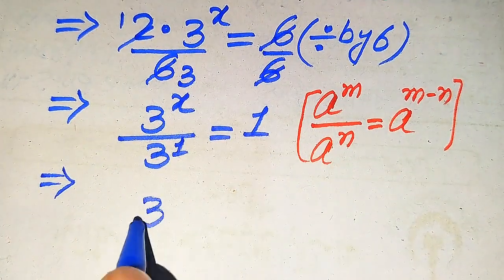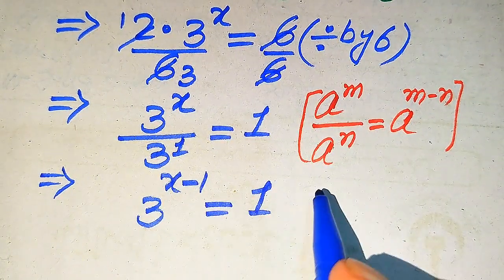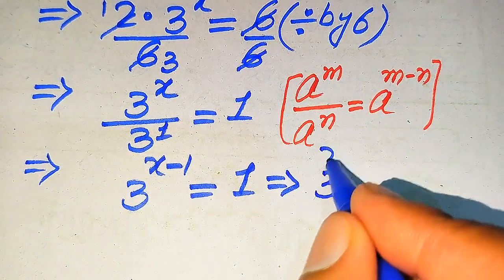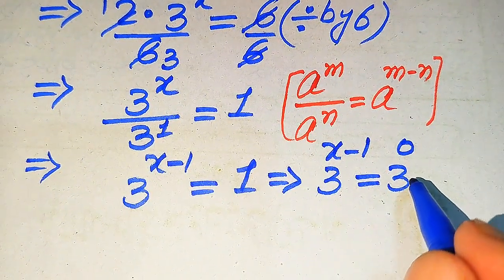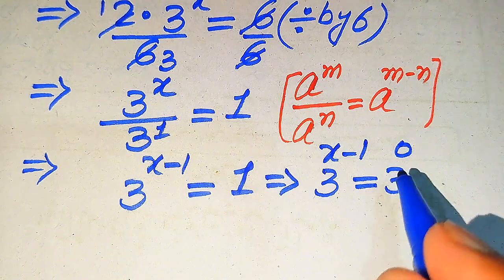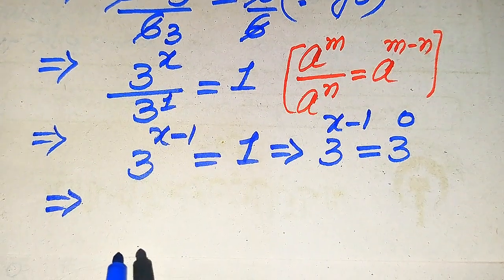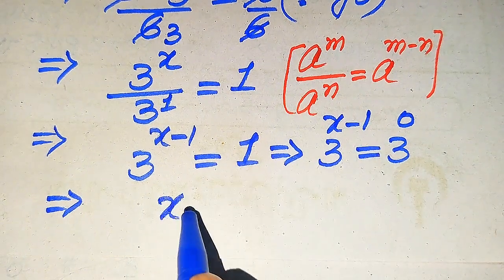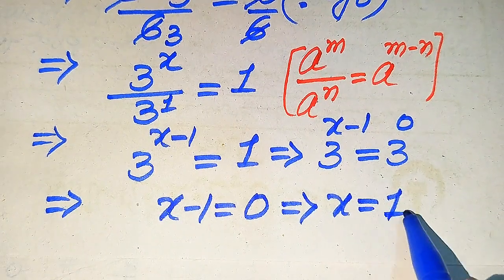According to this exponential law we move the exponent in the denominator towards the numerator exponent. So we move this 1 towards x and it becomes 3 to the power of x minus 1 equals 1. We write the right hand side 1 as 3 to the power of 0, since any term to the power of 0 equals 1. Now we equate the exponents: x minus 1 equals 0, which gives x equals 1.